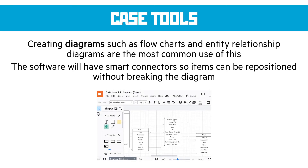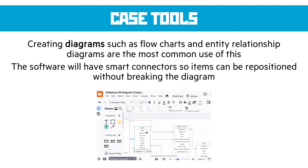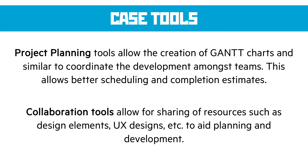Creating diagrams is really useful. Things like flowcharts, or entity relationship diagrams, are much easier to build with computer systems because the links become dynamic — as things move around, it doesn't break the diagram. We've also got project planning tools that allow the creation of Gantt charts and other plans to coordinate development amongst teams, giving us a better idea of how long things are going to take. Collaboration tools allow sharing of resources like design elements and user experience designs to aid planning. By having a basic page design built by one person, we can drag it in and customize it for the rest of the pages in the site or application.